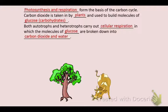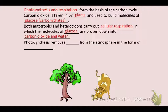Photosynthesis removes carbon dioxide from the atmosphere — carbon dioxide is the carbon compound that photosynthesis takes from the air. That's how it gets the carbon atoms to make the glucose molecules.